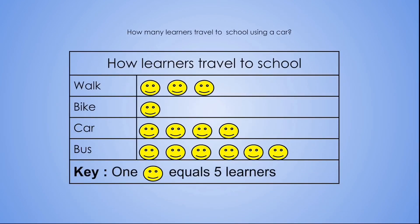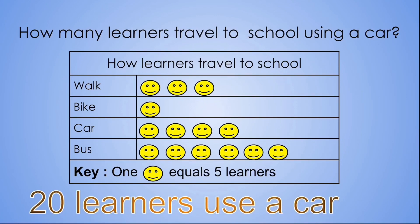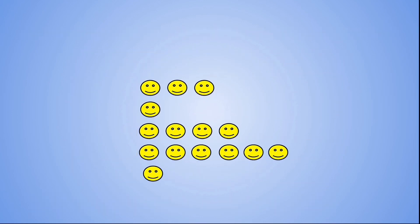Our next question is how many learners travel to school using a car? So we're going to look at our car row. How many smiley faces are there? One, two, three, four. But remember one smiley face equals five learners, so we have to count in fives. Let's count together: five, ten, fifteen, twenty. Therefore there are twenty learners that use a car.